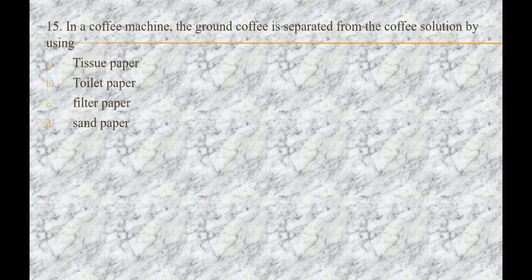Next question is: in a coffee machine, the ground coffee is separated from the coffee solution by using — option A) tissue paper, option B) toilet paper, option C) filter paper, option D) sand paper. The answer is C, that is filter paper.